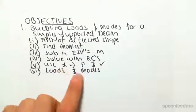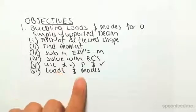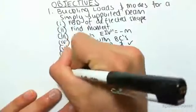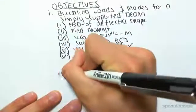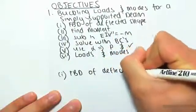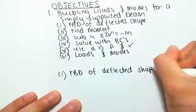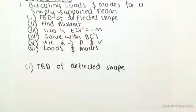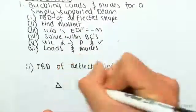So let's go to number one. We're going to do a free body diagram of the deflected shape. So as I said, we're dealing with a simply supported beam, so we have a pin and a roller.